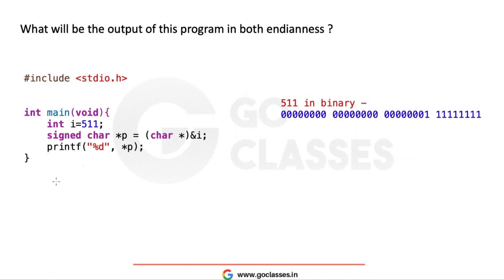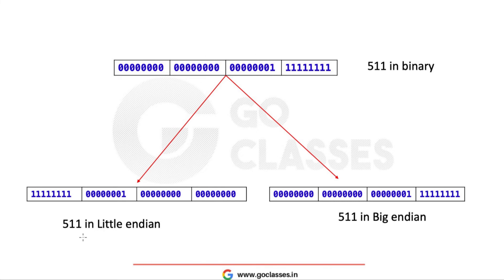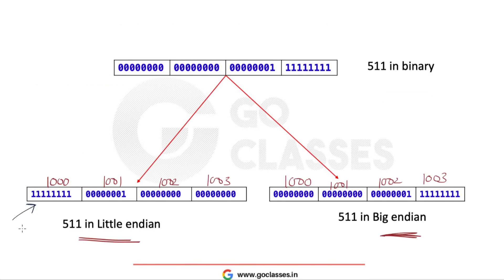Now let's look at an example where i is 511. In binary, 511 is represented like this in 32 bits. Suppose i is stored at address 1000 — in little-endian it is stored in reverse, in big-endian it is stored directly. P is set to address of i as a char pointer, so p points to address 1000. In little-endian it is pointing to the least significant byte; in big-endian it is pointing to the most significant byte.